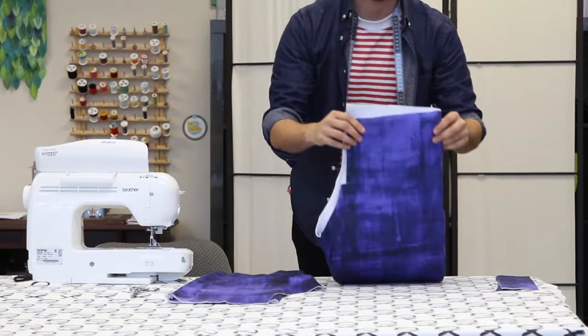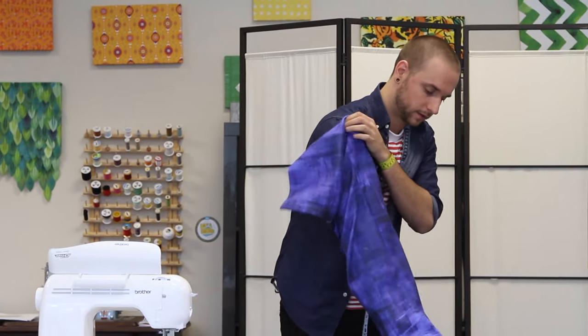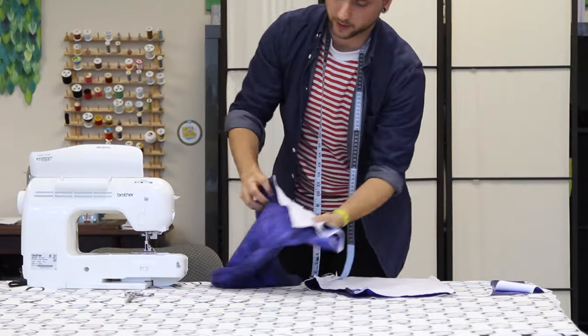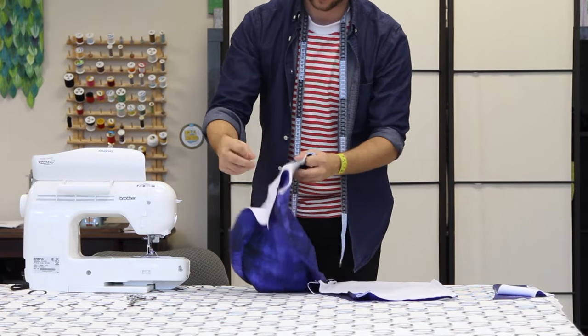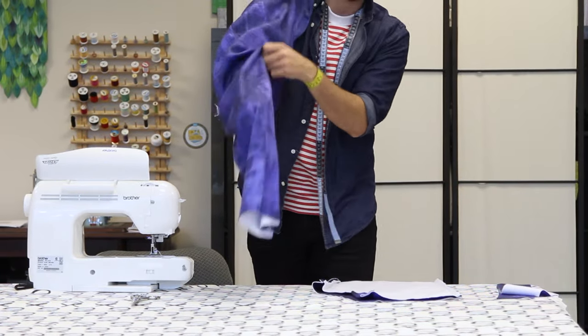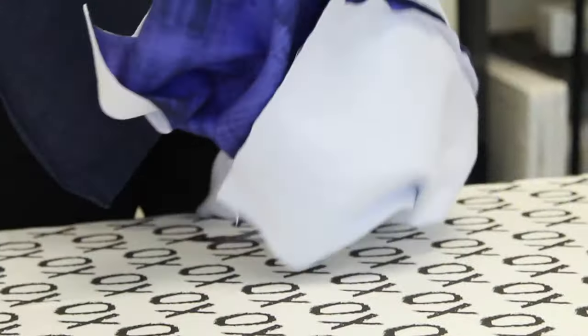Turn one of the pant legs inside out. Insert the right side out pant leg into the inside out pant leg so the right sides are together.